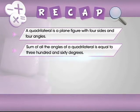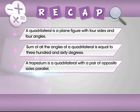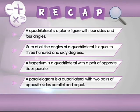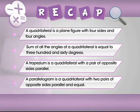Sum of all the angles of a quadrilateral is equal to 360 degrees. A trapezium is a quadrilateral with a pair of opposite sides parallel. A parallelogram is a quadrilateral with two pairs of opposite sides parallel and equal.